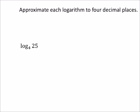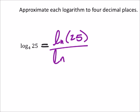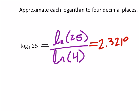All right, let's do this one as well. We used the common logs on that last one, so let's look at the natural logs, because again we get to choose the base — which is why the change of base is very nice. So we've got the natural log of 25 divided by the natural log of 4, and when we put this into the calculator we get 2.3219, rounded to four decimal places.